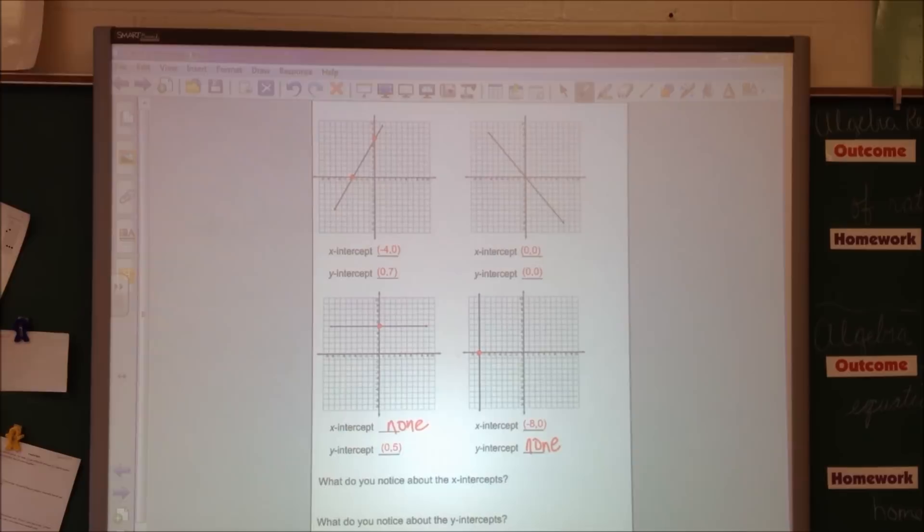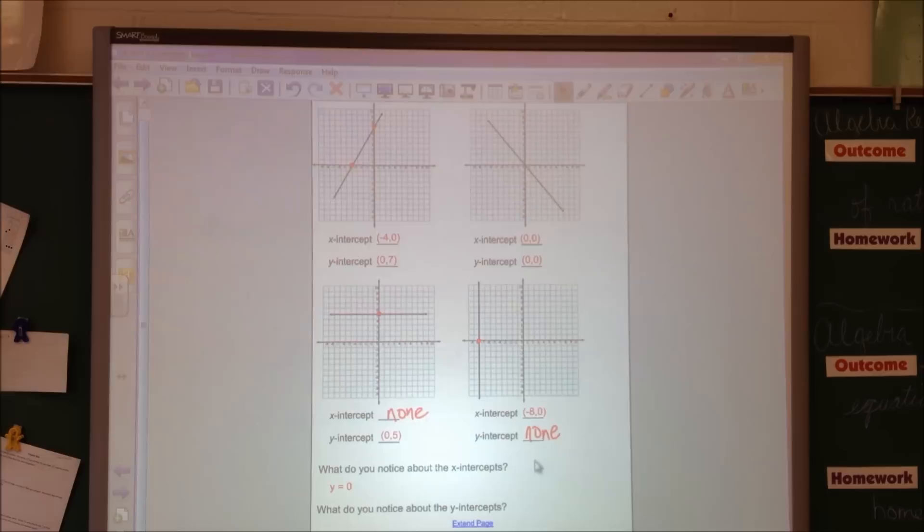Now go back and look at each of your x-intercepts. What do you notice about them? You're right. Y equals 0. So for every x-intercept, y equals 0. Now go back and look at all those y-intercepts. What do you notice about those? X. You got it. X equals 0.